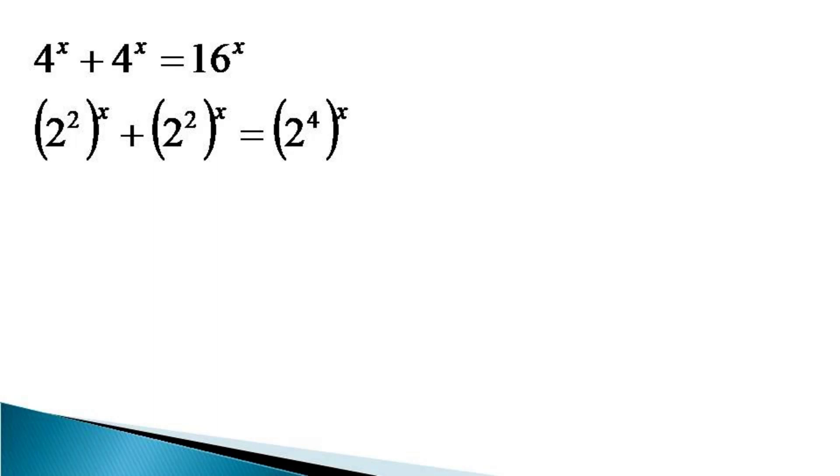Powers raised to powers get multiplied, and the equation becomes 2^(2x) + 2^(2x) = 2^(4x). The terms on the left-hand side are similar terms, so they get added.